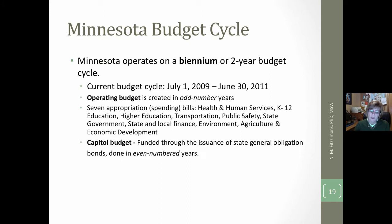Moving on to the Minnesota budget: the Minnesota budget cycle is a two-year biennium cycle. It started July 1st, 2015 and goes to July 30th, 2017. The operating budget is created in odd-numbered years, so it was created in 2015. The capital budget, or bonding budget, occurs in even-numbered years. There are sub-appropriation bills, or spending bills, that the Minnesota House and Senate must pass and that the governor signs into law.